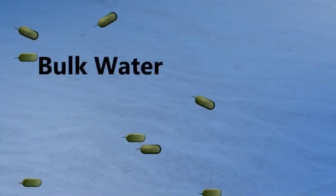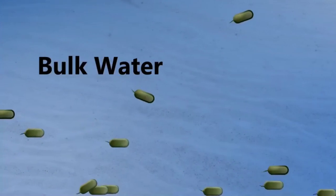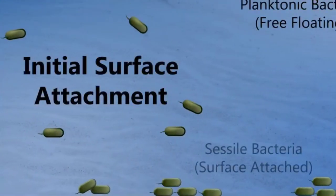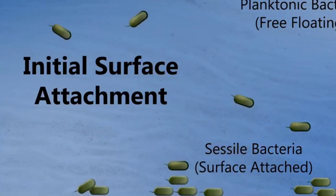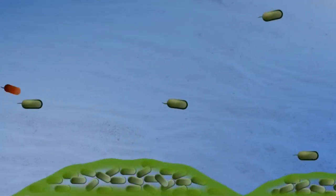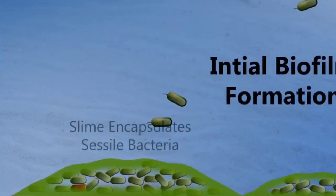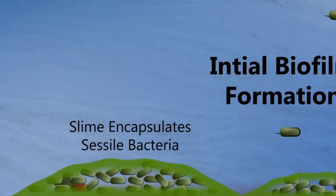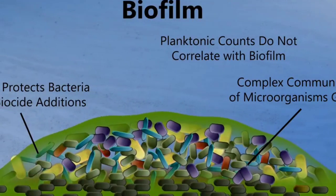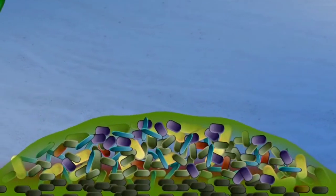Microorganisms need a solid surface conditioned with sufficient nutrients for growth. Once microorganisms get access to sufficient nutrients, they multiply and newly formed cells cling to each other as well as the surface, forming a confluently growing colony. When this mass of cells becomes large enough to entrap debris, nutrients, and other microorganisms, a microbial biofilm is established.